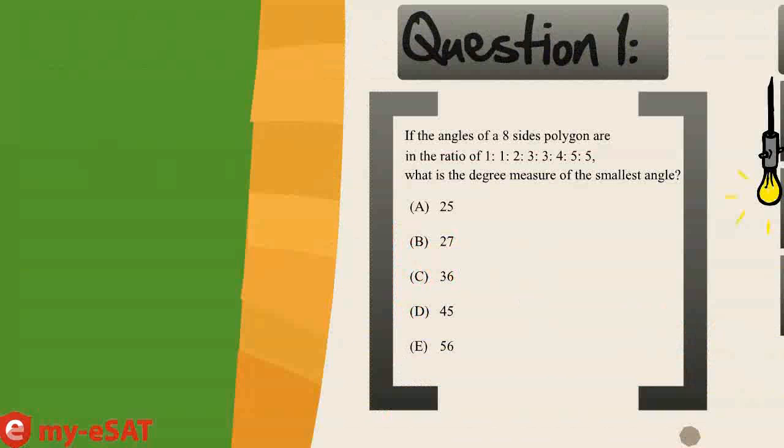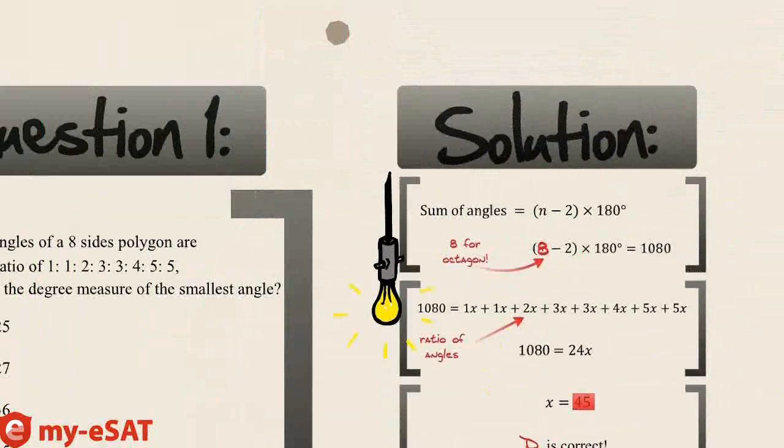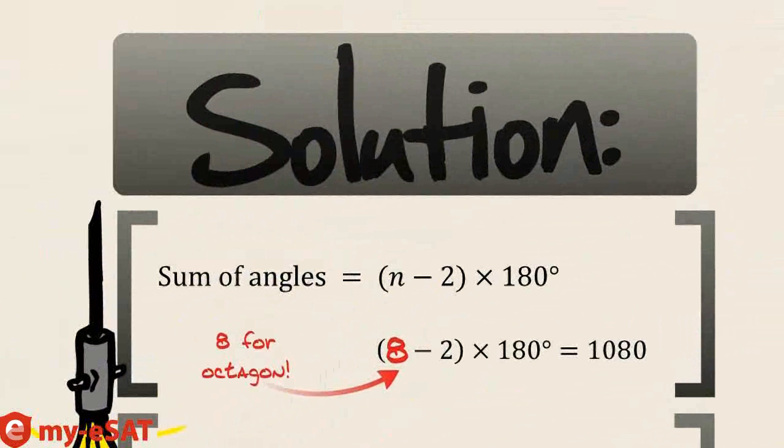Alright, so this problem is not too difficult, as long as you remember the sum of the angles formula. To find the sum of the angles of an octagon, plug in 8 for n into the equation. Great, the sum of the angles of an octagon is a total of 1080 degrees.